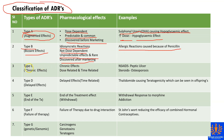Type C stands for chronic effects. This type is both dose related and time related. Examples include non-steroidal anti-inflammatory drugs causing peptic ulcer, and steroids-induced osteoporosis.